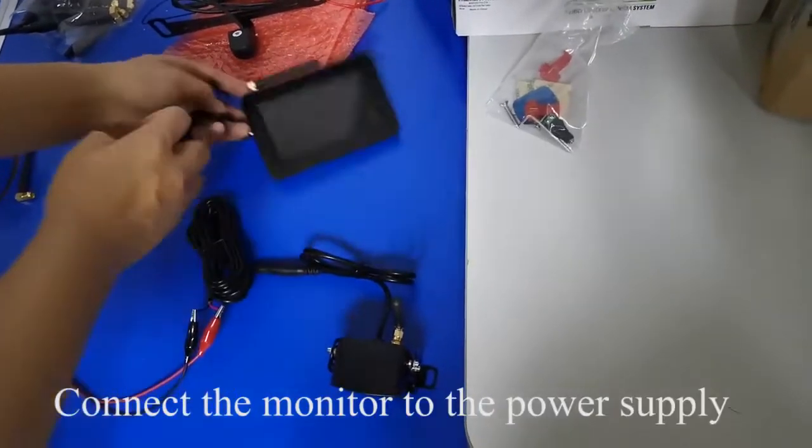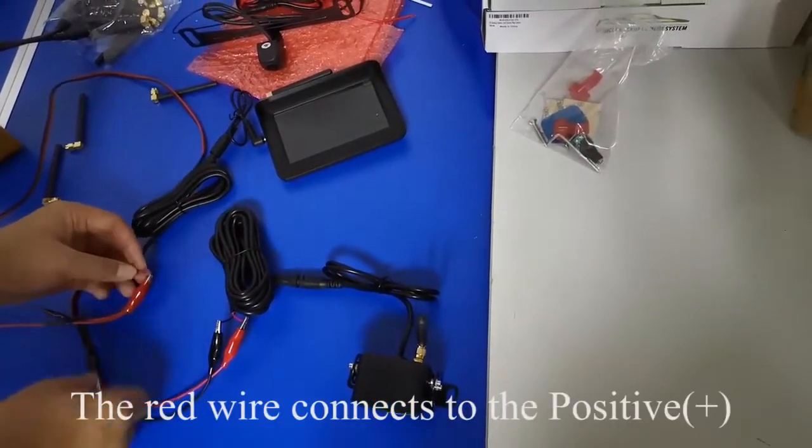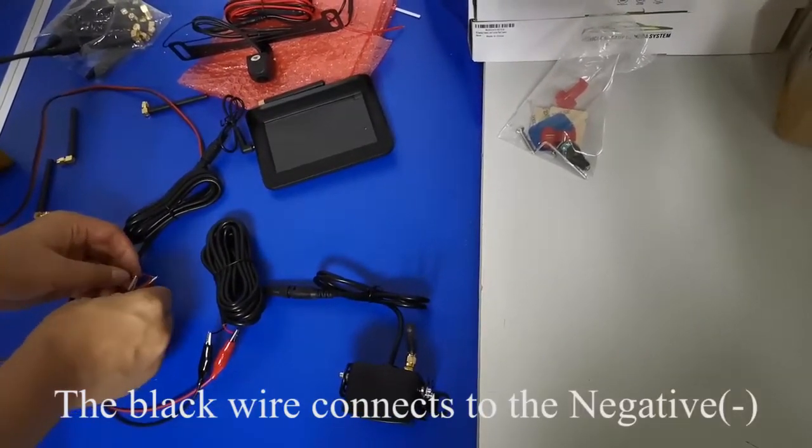Connect the monitor to the power supply. The red wire connects to the positive plus. The black wire connects to the negative.